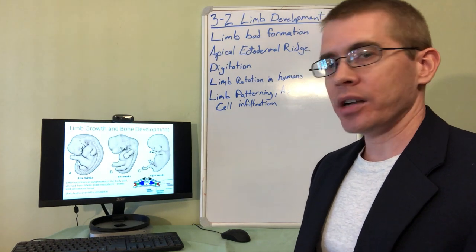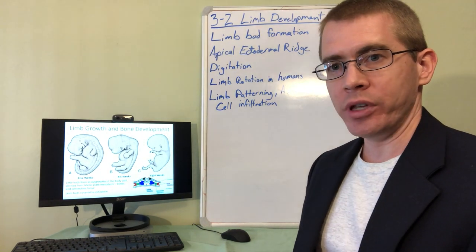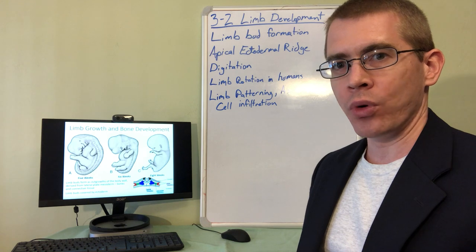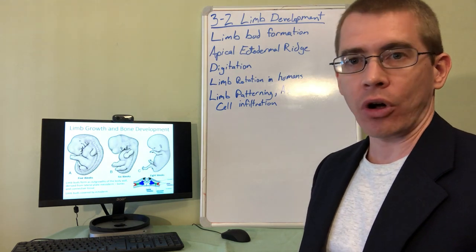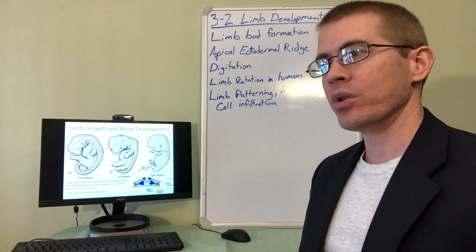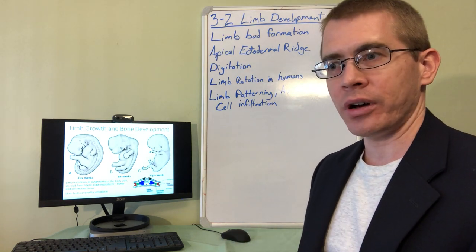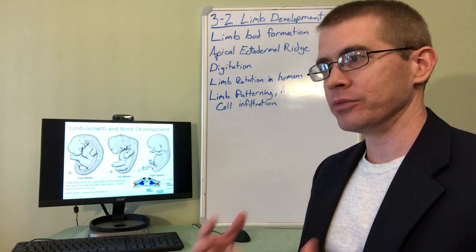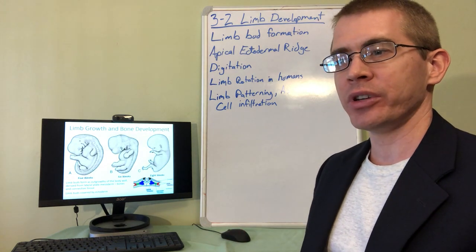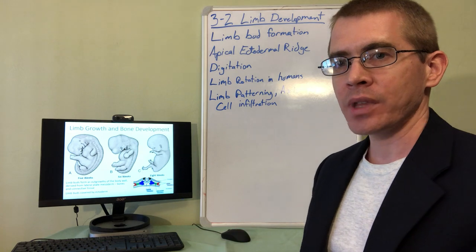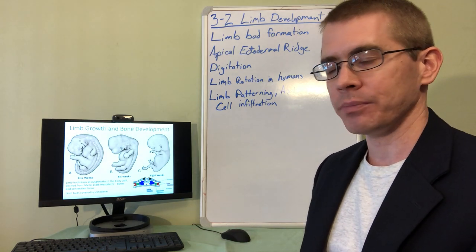We've already talked about development up through week four. By the end of week four, about day 28, the majority of the central nervous system has already been formed. All of the main structures, the primordial developmental patterns have been set in place and at this point it's just a matter of expanding upon that central nervous system.